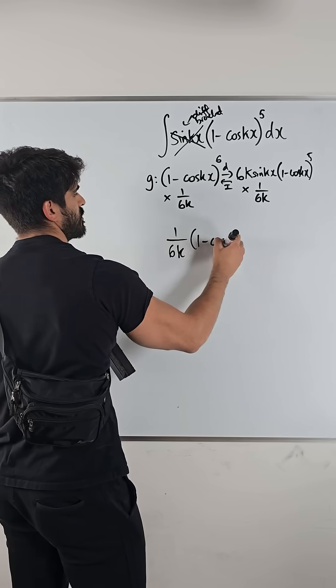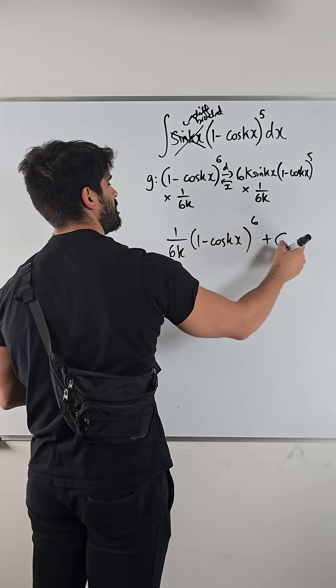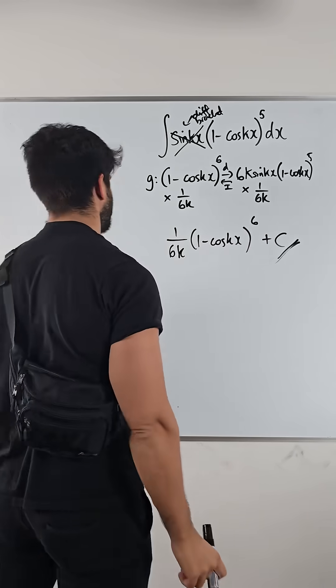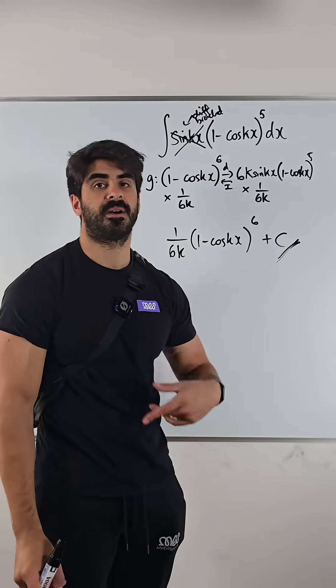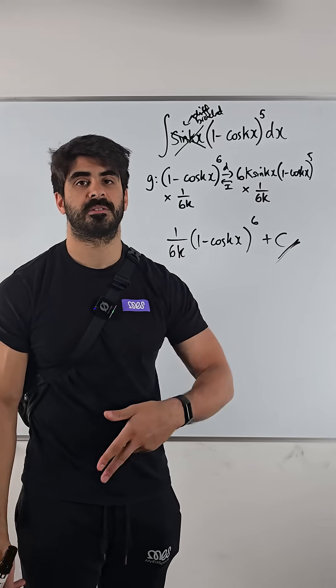And there's your answer: 1 over 6k times (1 - cos kx) to the power of six plus c. And there is your answer, nice and simple. Save this video as part of, like I said, your integration by recognition.